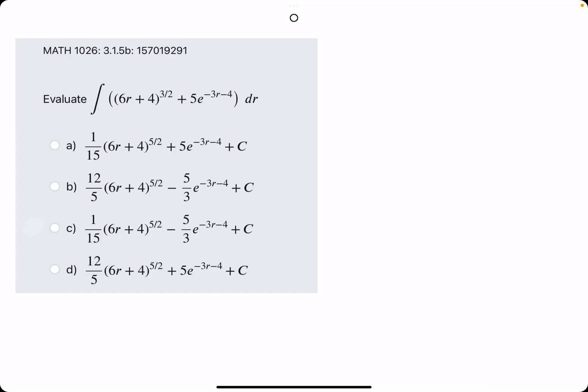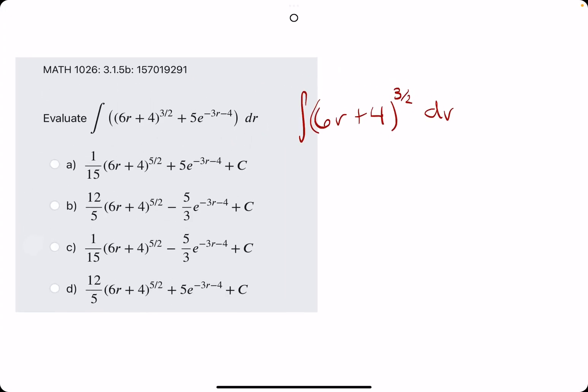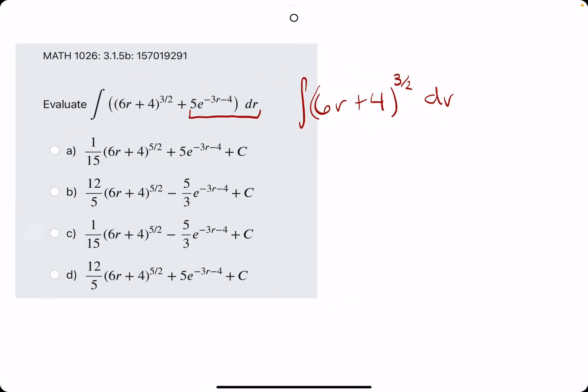In this problem, we will still be using u-substitution. However, we might need to do it twice. We want to use it for the first part, the 6r plus 4 to the 3 over 2. We'll go ahead and cut that off at dr, and then we'll do it eventually again for the second half, the 5e term. So let's start with the first half.